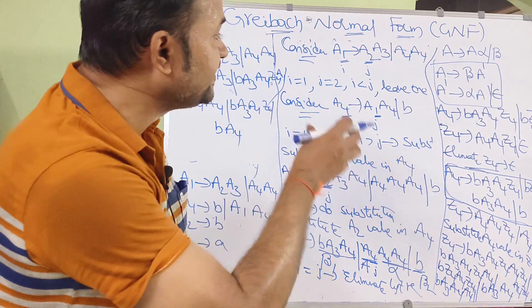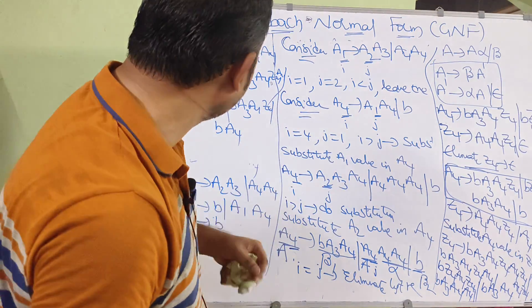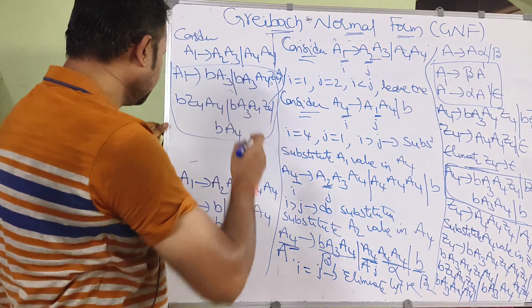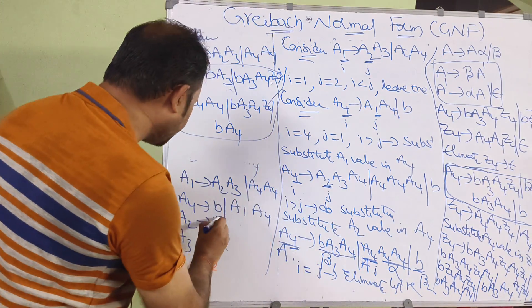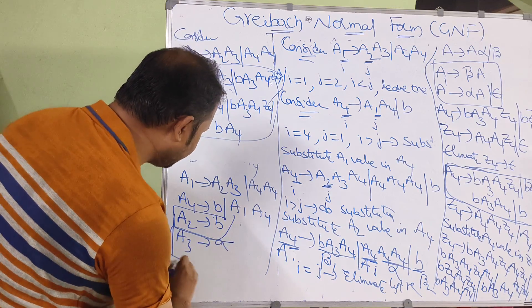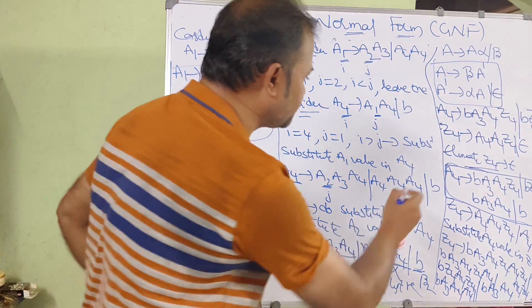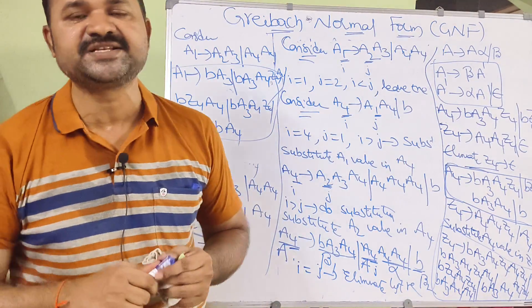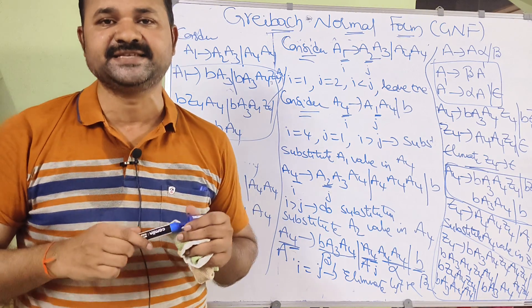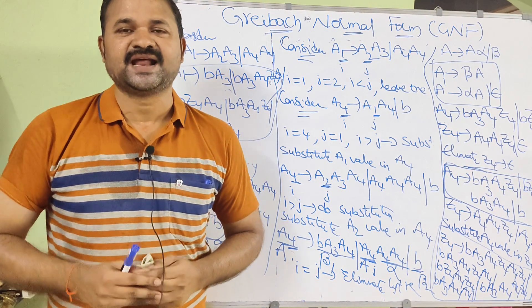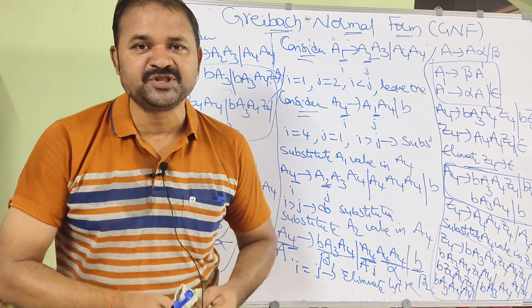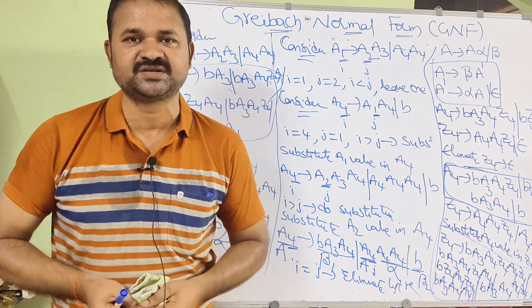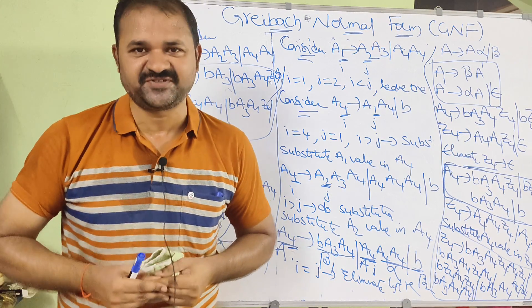After converting the grammar into GNF, write out all productions: A1 productions, A2 productions (already in GNF), A3 productions, A4 productions, and Z4 productions. In this way we can solve any such problem very easily. Please like the video, subscribe to the channel and share it with your friends. Thanks for watching.